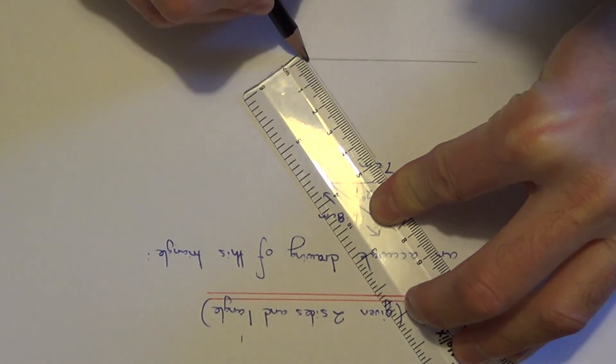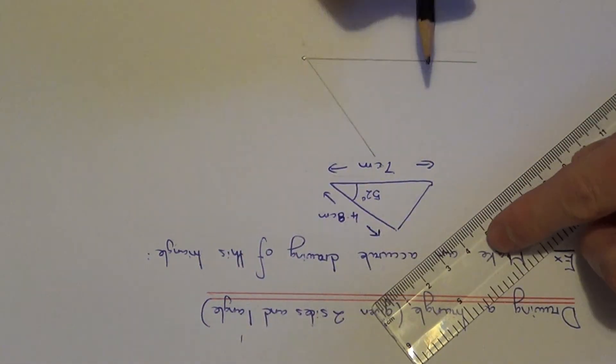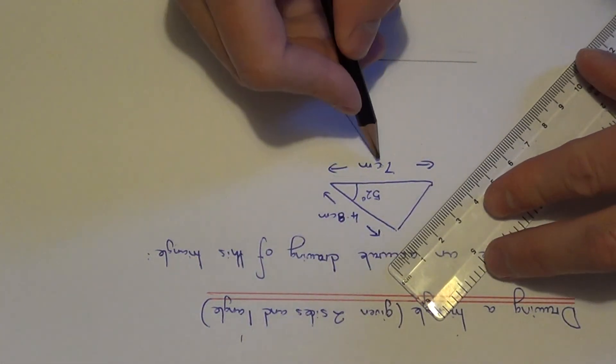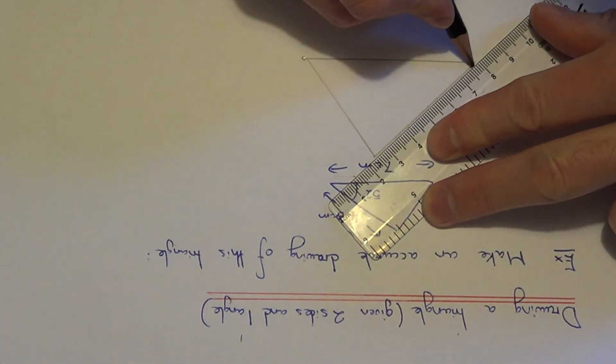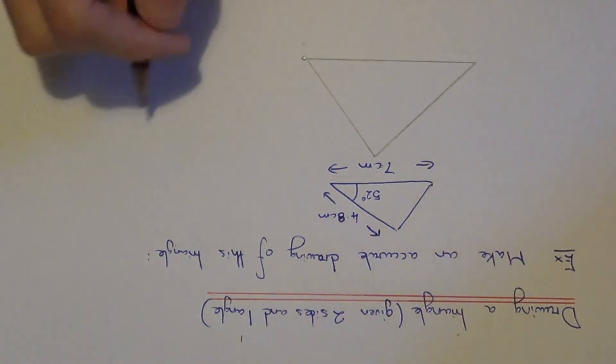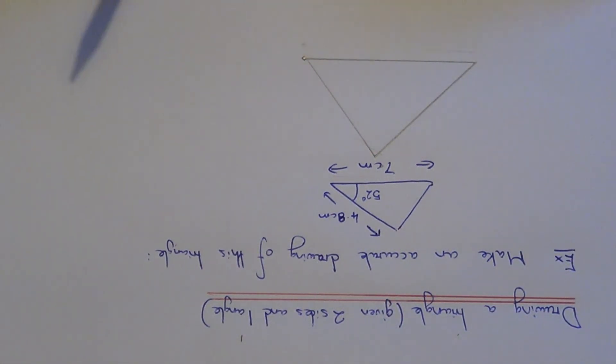So if we draw the line back to the right hand edge and then finally just complete the final line, that is our triangle drawn accurately.